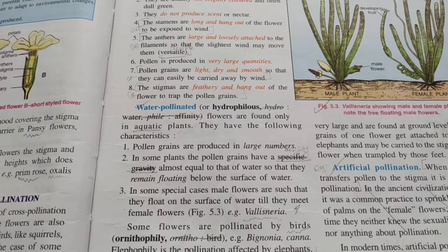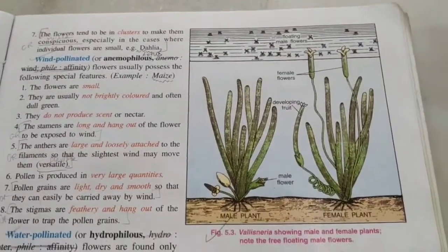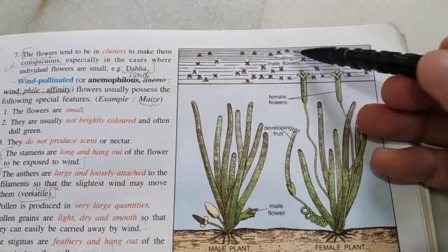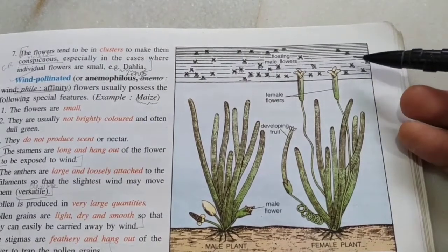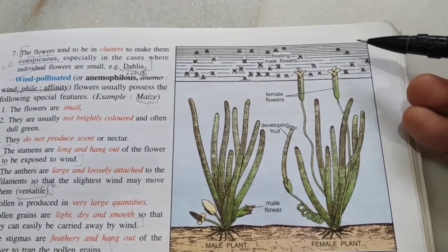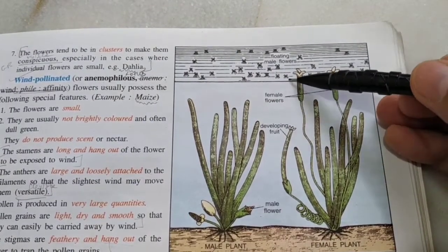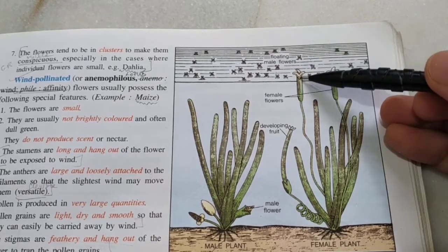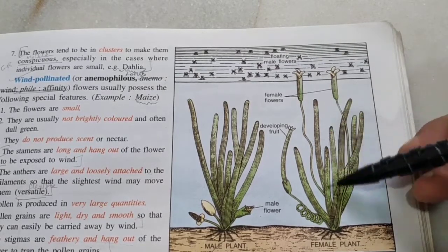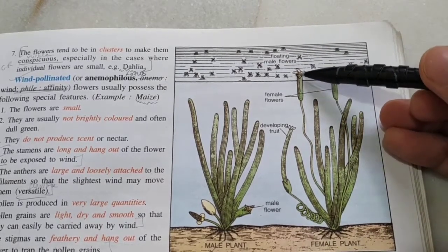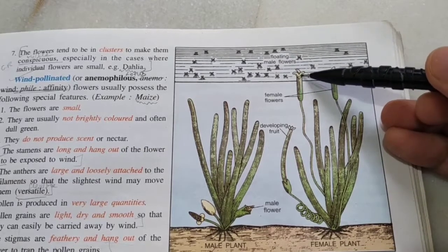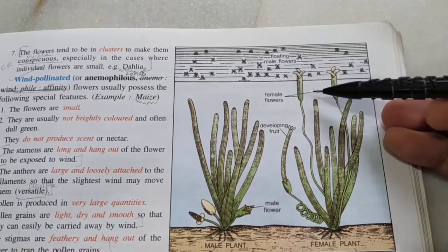Sometimes even the male flowers float on water. For example, in Vallisneria, the male flowers float on water searching for female flowers to contact accidentally. When the male flowers come in contact with the female flowers — which are also floating but connected to the plant — the pollen grains may fall onto the female flowers and cross-pollination can take place.